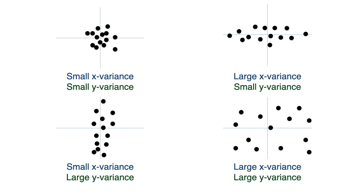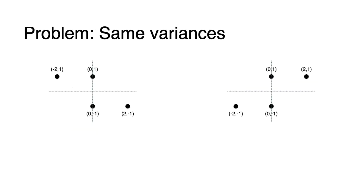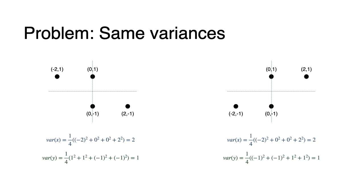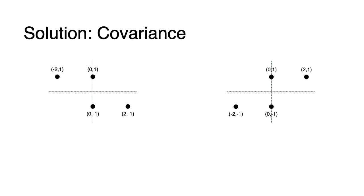However, x-variance and y-variance don't tell us the entire story. For example, let's look at these two datasets. If we calculate the x and y-variance, they have the exact same x and y-variance, which is 2 and 1. However, they are very different. One belongs to one diagonal, and the other belongs to the opposite diagonal. So how do we tell these apart?